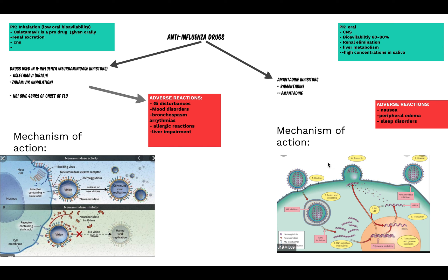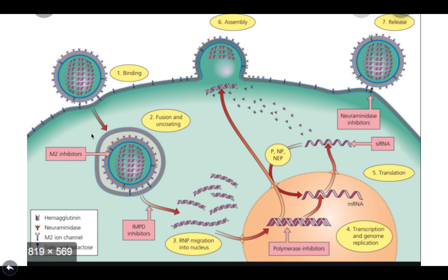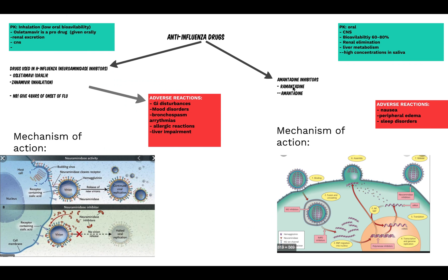The other group of anti-influenza drugs are amantadine inhibitors. They work by blocking the M2 protein, which blocks the uncoating of the virus. The virus binds and normally fuses and uncoats its RNA, but M2 inhibitors block this step. The examples to remember are amantadine and rimantadine. They have CNS distribution, renal elimination, liver metabolism, and are most highly concentrated in the saliva. Adverse reactions include peripheral edema and sleep disorders.